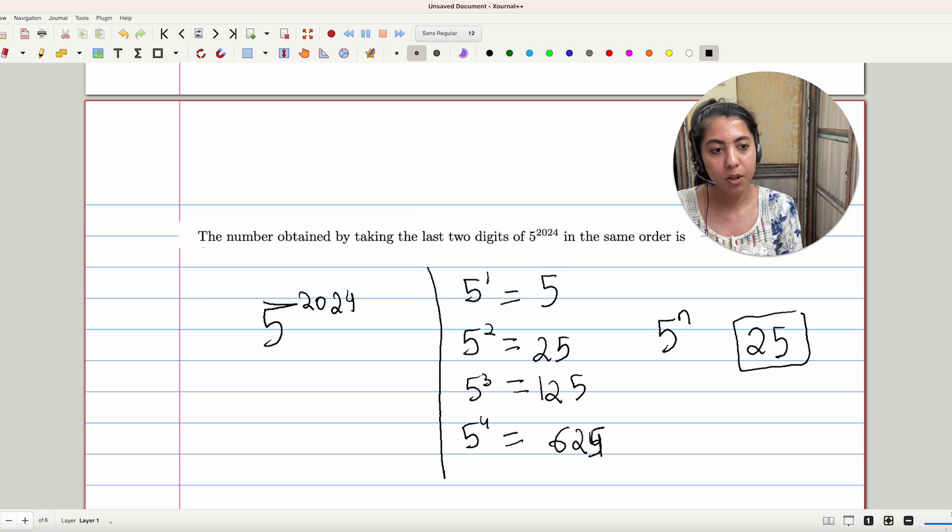So by this observation, and without solving the question further, we can say that 5 to the power 2024 will have its last two digits as 25.